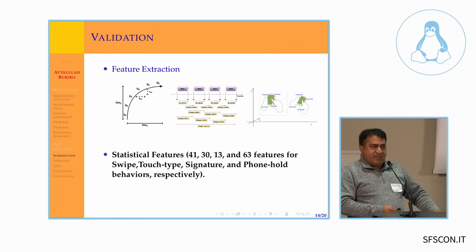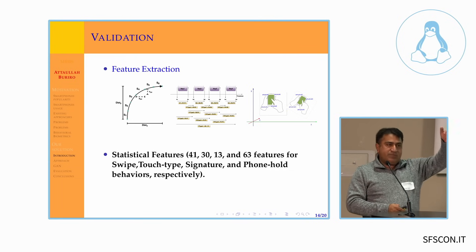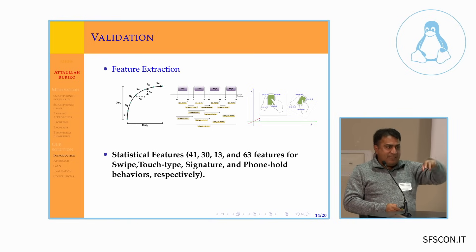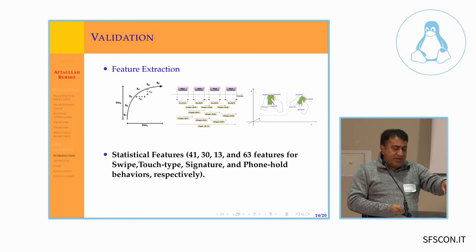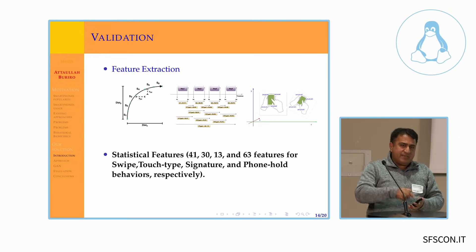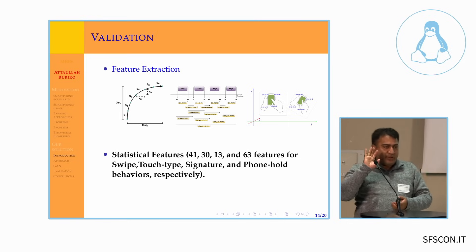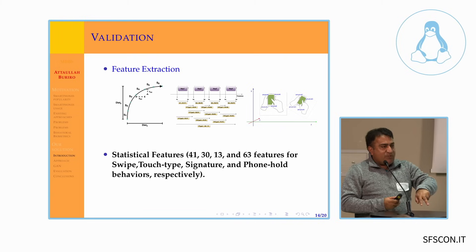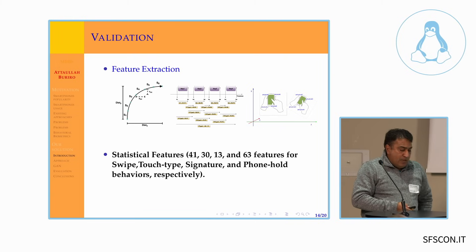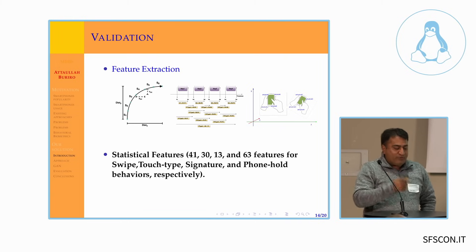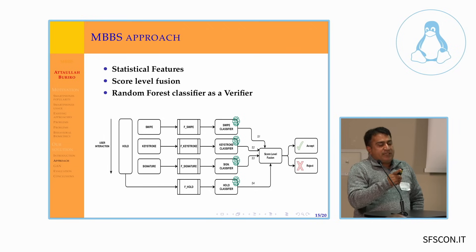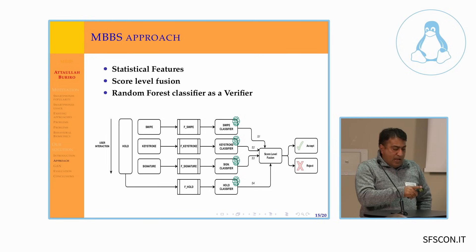The features extracted include time signals — the traces you leave on the X and Y plane. For keystroke dynamics, we capture how long you pressed each key and when you released it, and the time between two keys. For phone holding, we extract statistical features — kept very simple because this application has to run on the phone efficiently, so we need something really quick.